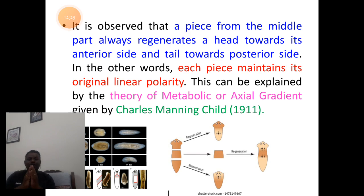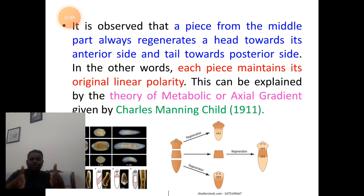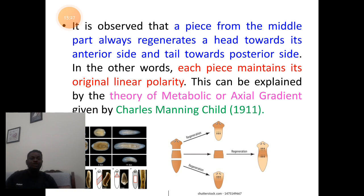Students, when planaria is cut into three pieces, the head formation process will take place first, and then follows the rest of the parts. This concept of regeneration, where it is dependent on the polarity of the anterior-posterior axis, was explained by Charles Manning Child in 1911 in the form of a very popular theory called the axial gradient theory, also called the metabolic gradient theory.